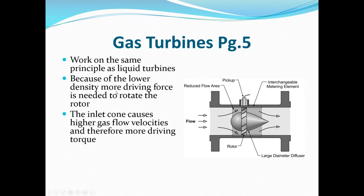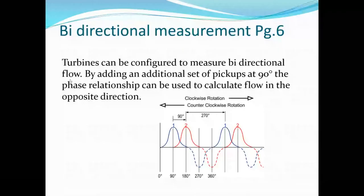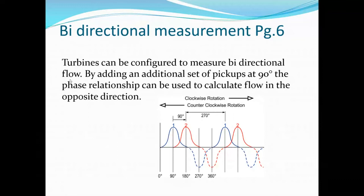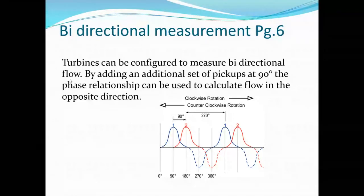Some turbine meters can be configured to measure bidirectional flow. The way they do this is by adding an additional set of pickups at 90 degrees. The phase relationship between the two pickups is used to calculate flow in the opposite direction — if one is in phase ahead or behind the other, the direction of rotation can be determined. So these are bidirectional devices.